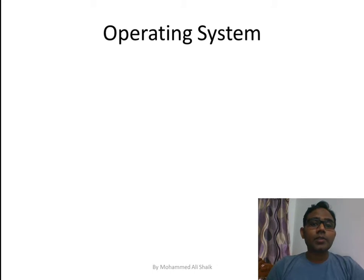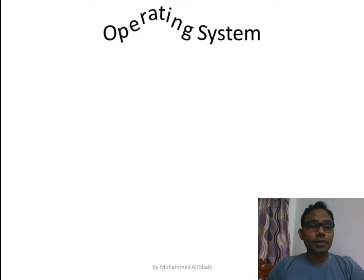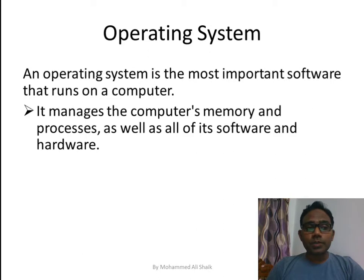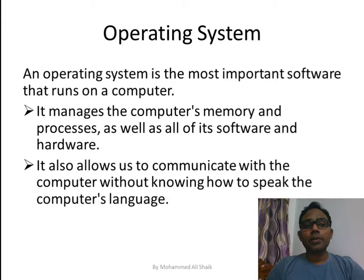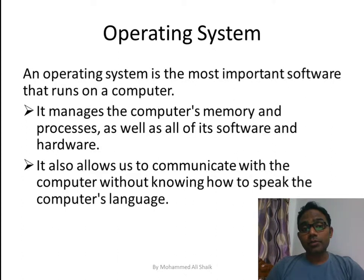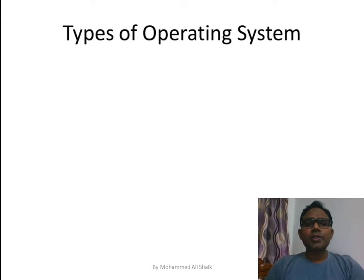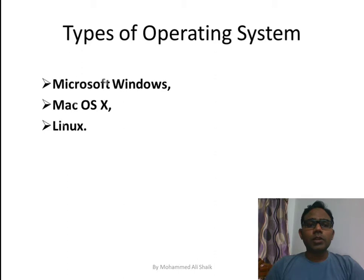A computer runs on an operating system. Without an operating system, a computer is useless. The operating system is the most important software that runs a computer — it manages memory, processes, software, and hardware, and allows communication with other computers. The three most widely used operating systems today are Microsoft Windows, Mac OS X, and Linux.